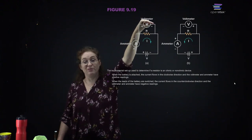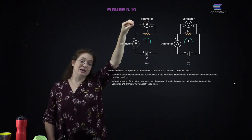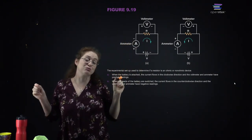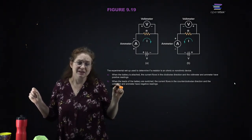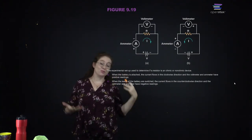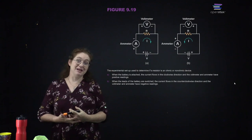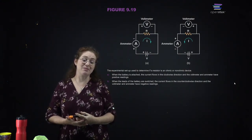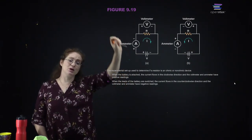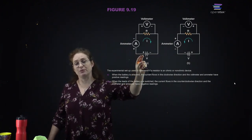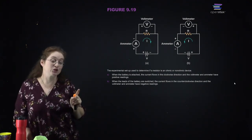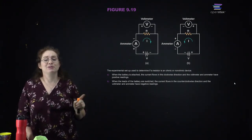If you put your ammeter in parallel, all the current goes through the ammeter instead of your circuit, which fries it — so much current that the ammeter burns up. This is a common thing that happens in freshman physics labs. Watch very carefully before hooking up terminals to your circuit. You would not be the first student to fry an ammeter, but please try not to.